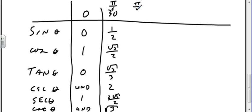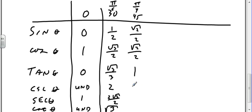Pi over four, 45 degrees: sine is square root of two over two, cosine is square root of two over two, tangent is one. Cosecant is square root of two, secant is square root of two, and cotangent is one.